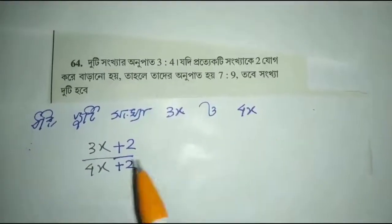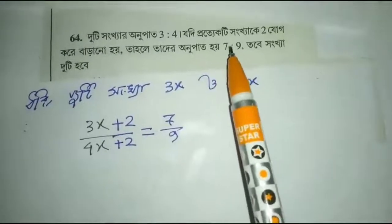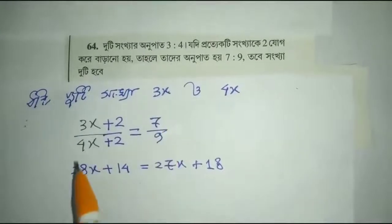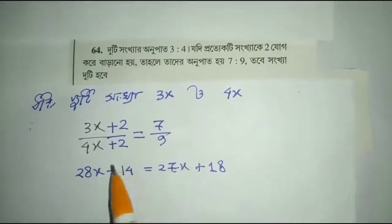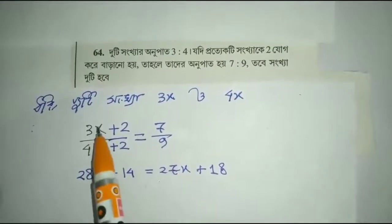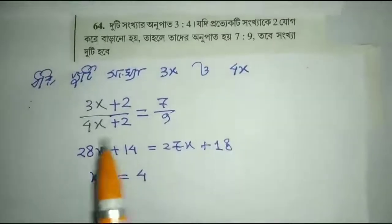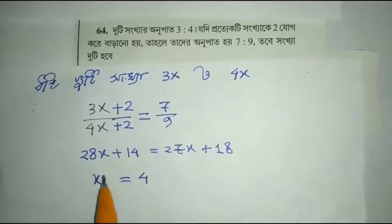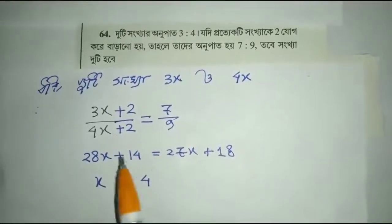4x is 2. 6x is 7 by 9. 7x, 7 by 9. 6x is 7x, 7 by 9. 7x, 4x plus 2. 7x plus 2. 9x plus 2.